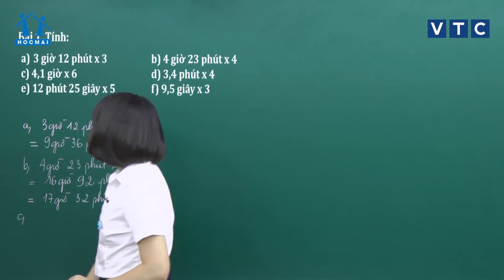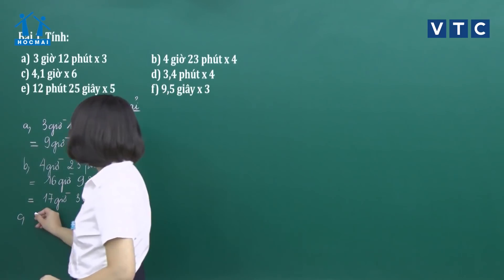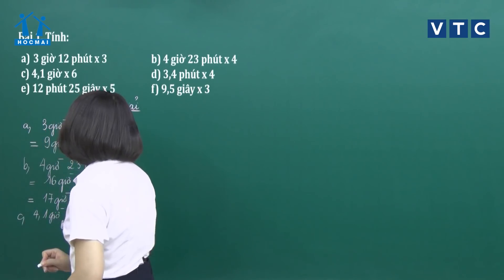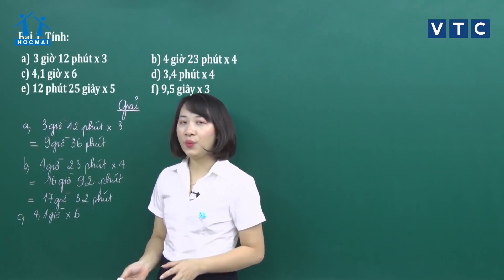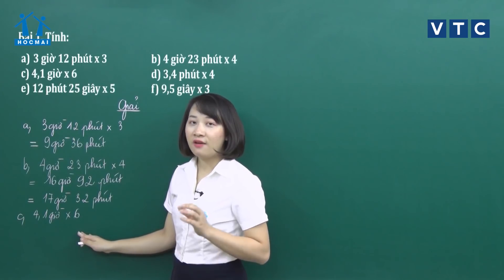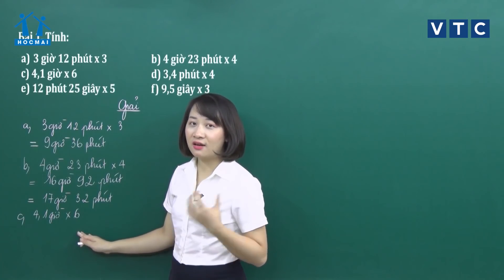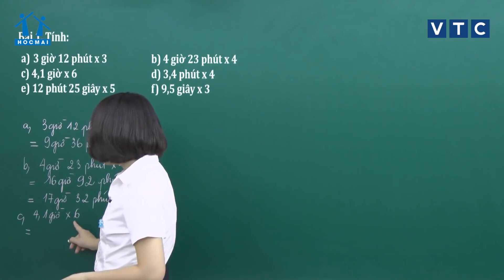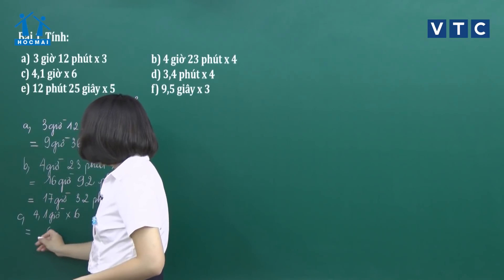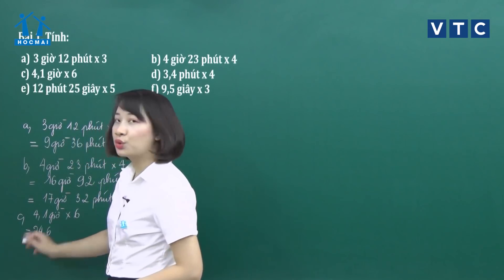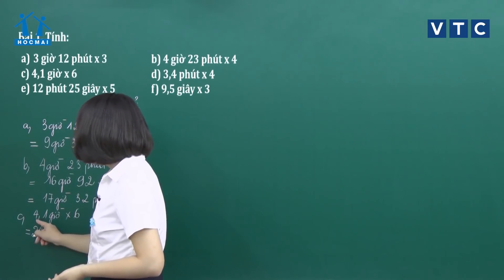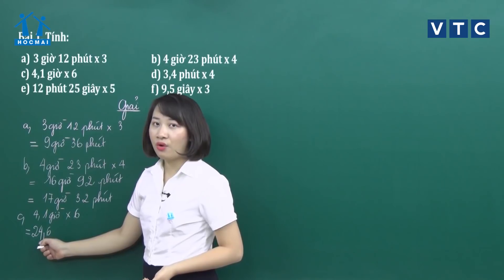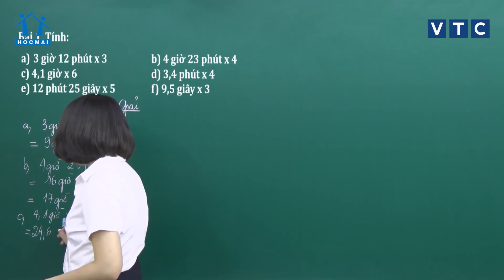Câu C: 4,1 giờ nhân 6. Với phép tính này chúng ta chỉ cần thực hiện nhân 1 số thập phân với 1 số tự nhiên rồi đặt đơn vị đo là giờ ở đằng sau kết quả. Lấy 4,1 nhân 6: 1 nhân 6 bằng 6, 4 nhân 6 bằng 24; có 1 dấu phẩy ngăn cách 1 chữ số ở phần thập phân, vậy kết quả là 24,6 giờ.